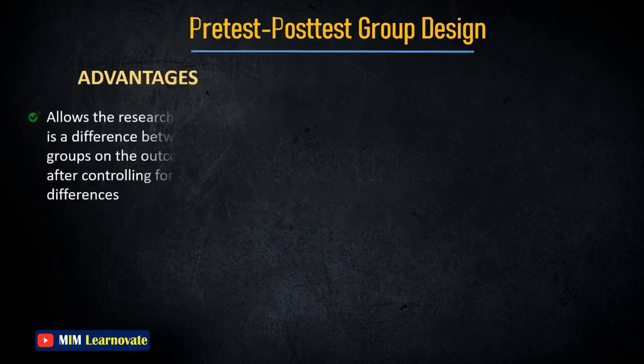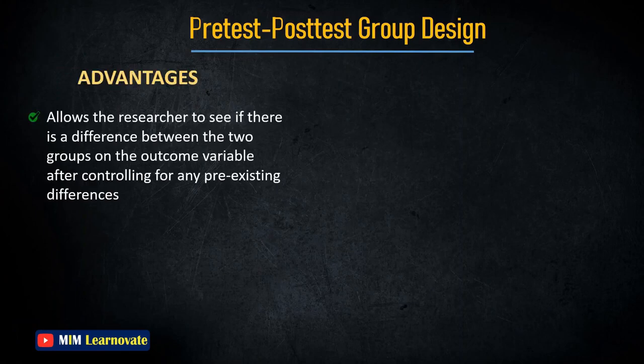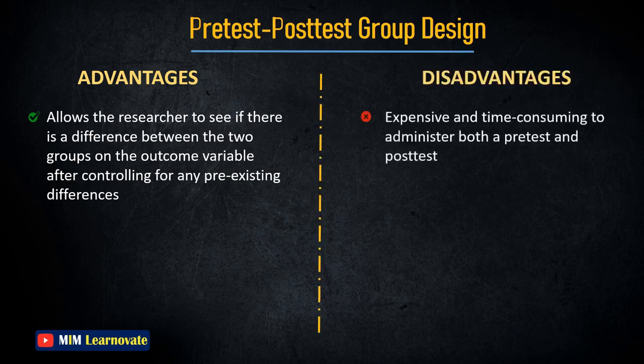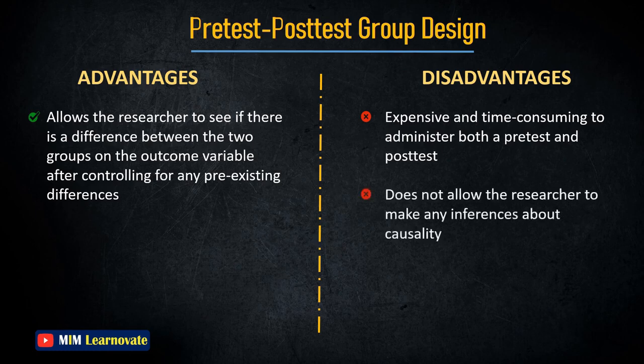Advantages: allows the researcher to see if there is a difference between the two groups on the outcome variable after controlling for any pre-existing differences. Disadvantages: it can be expensive and time-consuming to administer both a pre-test and post-test, and this design does not allow the researcher to make inferences about causality.